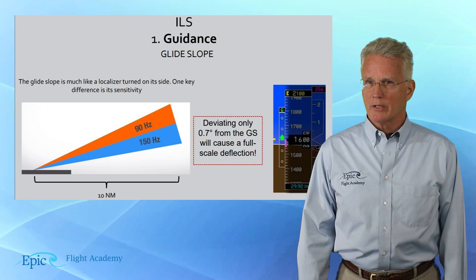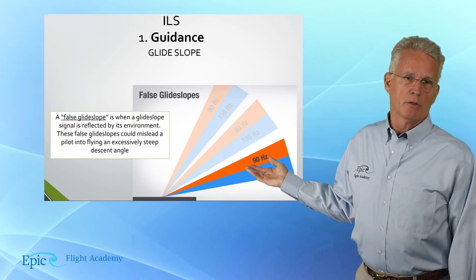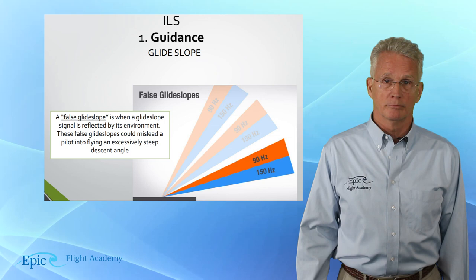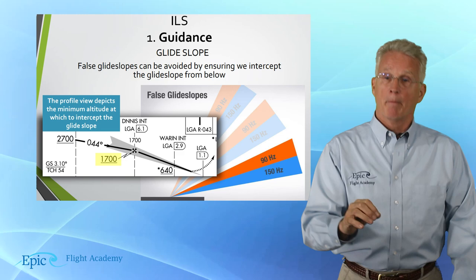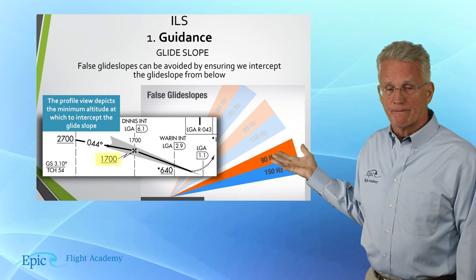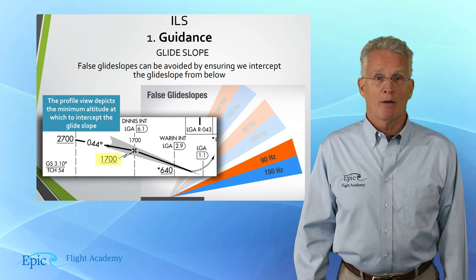False glide slopes are also an issue, as you can see in the diagram here. When a glide slope signal is reflected by its environment, these false glide slopes could mislead a pilot into flying an excessively steep descent angle. False glide slopes can be avoided by ensuring that we intercept the glide slope from below. The profile view from the approach chart depicts the minimum altitudes at which to intercept the glide slope.